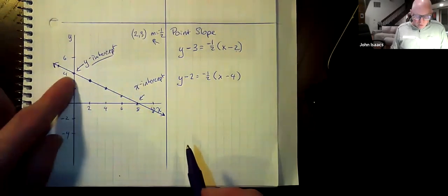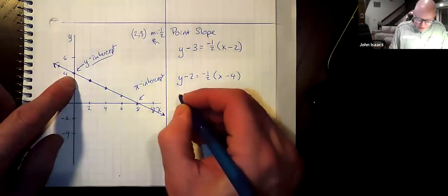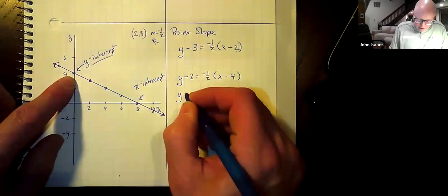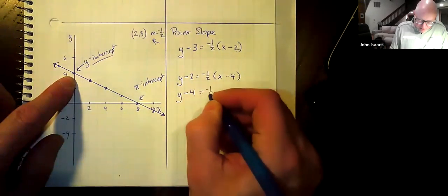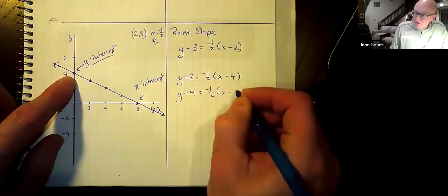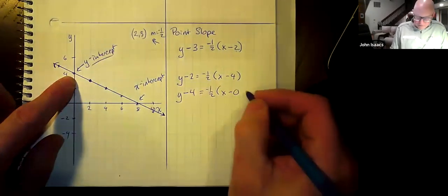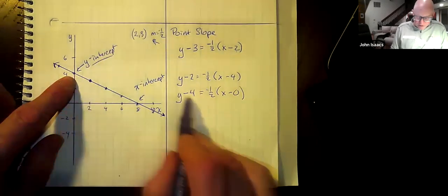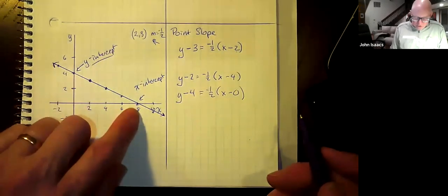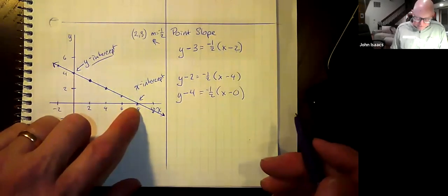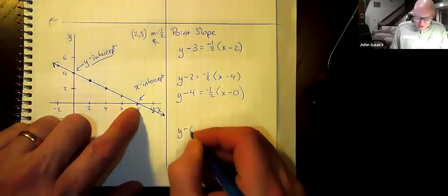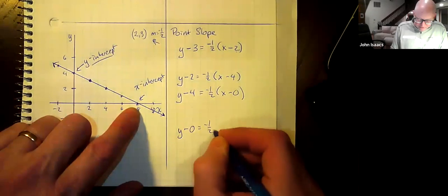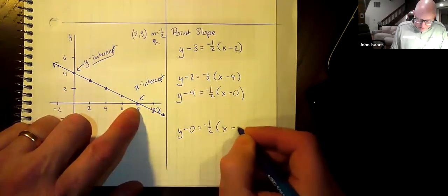If we use the y-intercept, we would have y minus 4 equals negative one-half times x minus 0. If we use that point in point-slope form. If we use this point in point-slope form, we would have y minus 0 equals negative one-half times x minus 8.